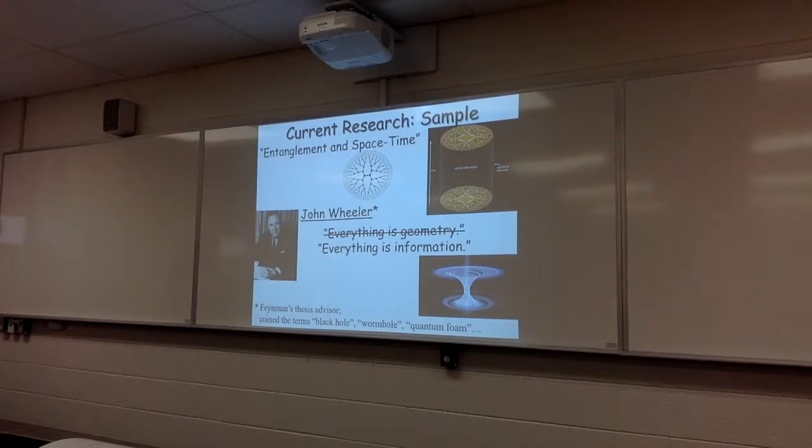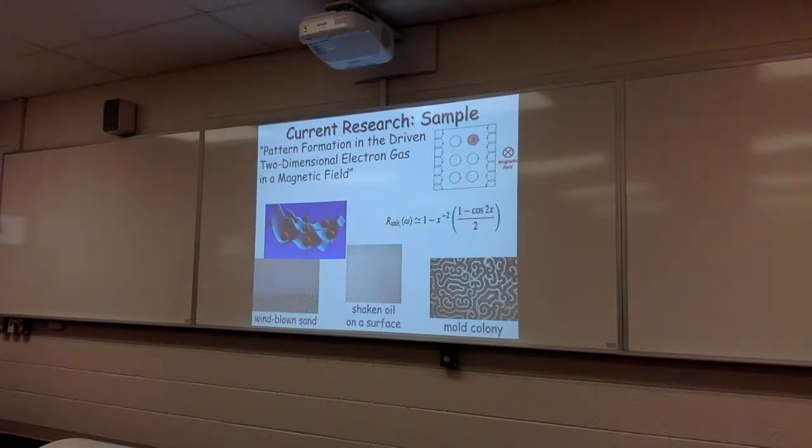So I spend most of my time thinking about entanglement, but I have some other things going on. This is a problem that's been on my mind for a number of years, namely pattern formation in the driven two-dimensional electron gas. So pattern formation is ubiquitous in nature. In wind-blown sand or shaken oil on a surface, you get patterns emerging. It's been found that if you take a two-dimensional electron gas and drive it with an AC field, all evidence seems to suggest that you get various types of patterns emerging in the system. And this is something that I want to take a serious crack at. During my sabbatical, this is something I'm going to pursue quite strongly.